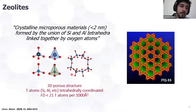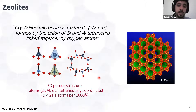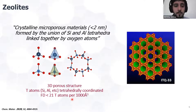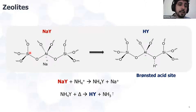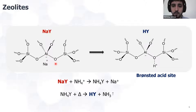Zeolites are 3D porous structures with T atoms — like silicon, aluminum, germanium, or titanium — tetrahedrally coordinated. They typically have a framework density of less than 21 T atoms per thousand cubic angstroms. An important property of zeolites is ion exchange. When a silicon atom is substituted by an aluminum atom, we have a charge due to the difference in valence, and this charge needs to be compensated by a cation, giving the zeolite its ion exchange capacity.